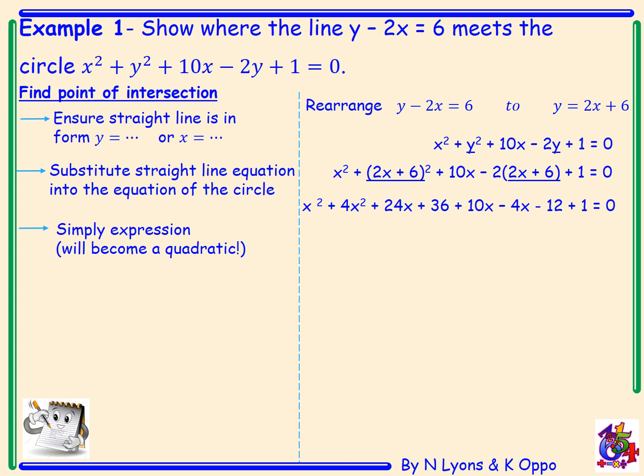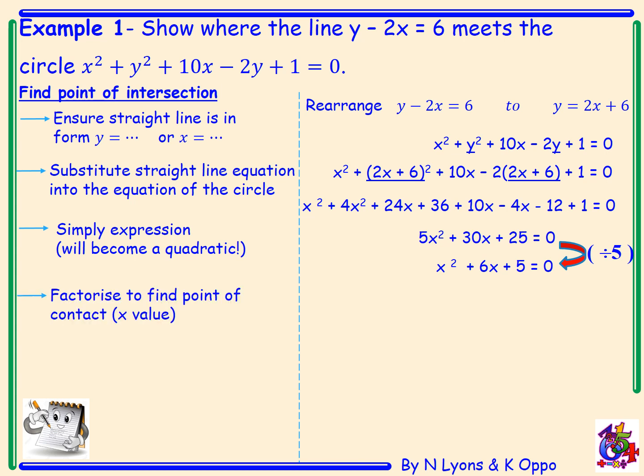This can then be simplified and it will become a quadratic: 5x squared plus 30x plus 25 equals 0. We divide everything by 5 to get x squared plus 6x plus 5 equals 0. Factorising gives (x plus 5)(x plus 1) equals 0. So x equals negative 5 or x equals negative 1 are the x coordinates of the points of contact.